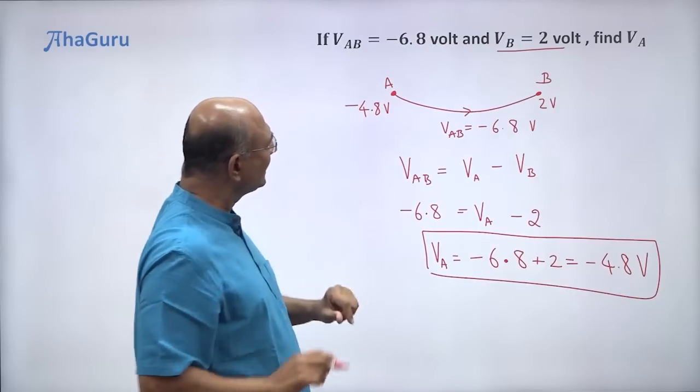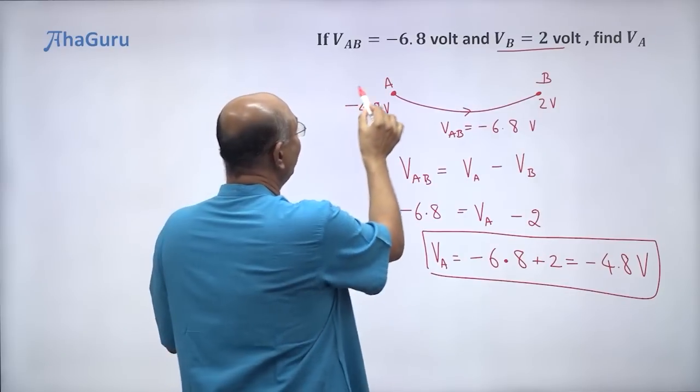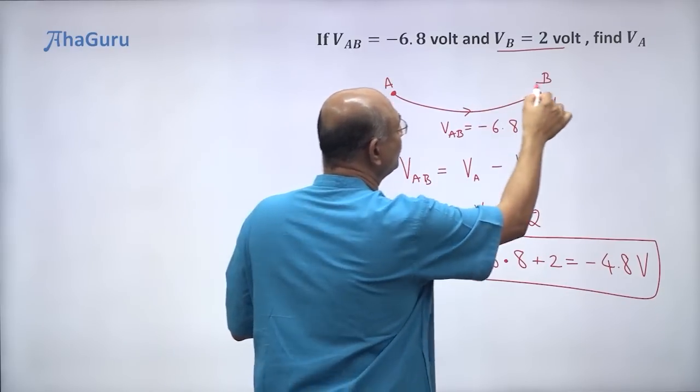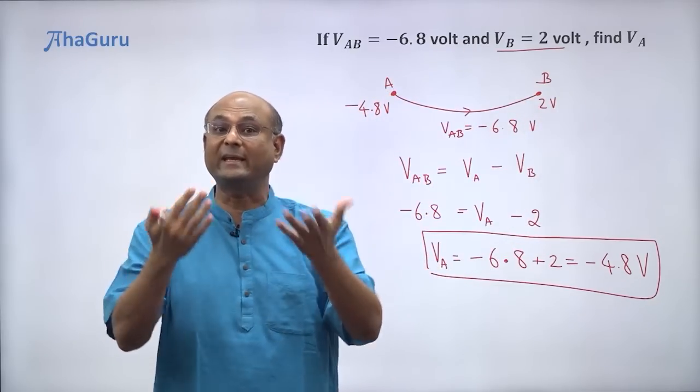Now let us think a little bit. VAB is negative. Is that okay? Yes. From minus 4.8, if you are going to 2, that means negative number to positive number. Potential has increased.